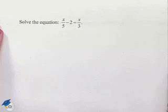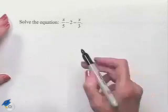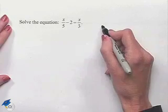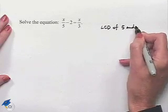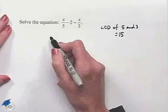Now let's look at another linear equation. Solve the equation x over 5 minus 2 equals x over 3. This equation involves fractional expressions. One thing we can do at the outset is to find the least common denominator of the denominators given. The LCD of 5 and 3 would equal 15.